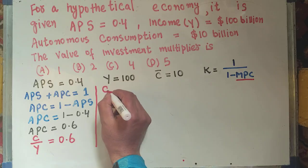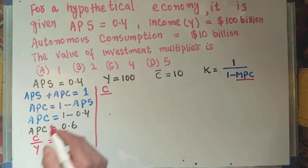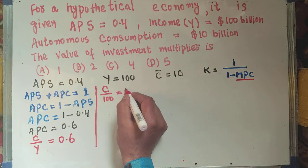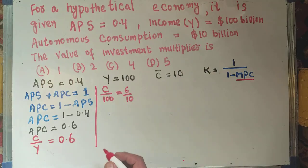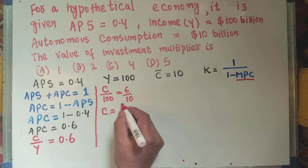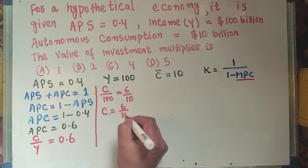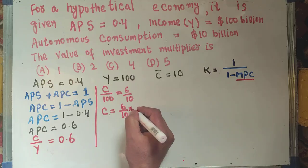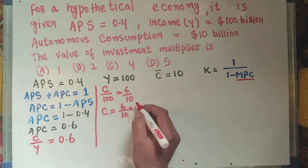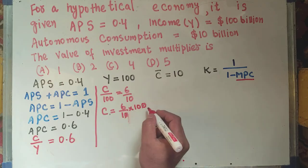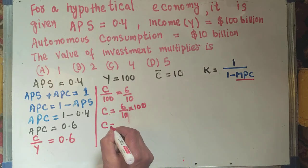Now we solve for C. Income is given as 100 billion, so C/100 = 0.6. We can write 0.6 as 6/10, so C = (6/10) × 100 = 60. That means our total consumption in the economy is 60 billion dollars.